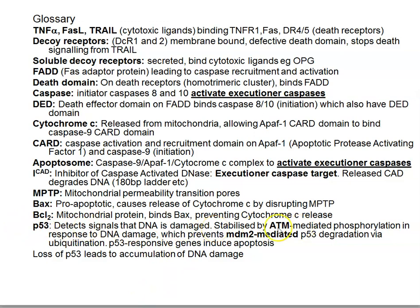p53 is stabilized by ATM-mediated phosphorylation so that it is unable to be degraded by MDM2, therefore we get more p53 expression. The result is that p53 induces Bax expression — a pro-apoptotic protein that causes cytochrome C release and activation of caspase 9 — and p53 also induces p21, which causes cell cycle arrest.